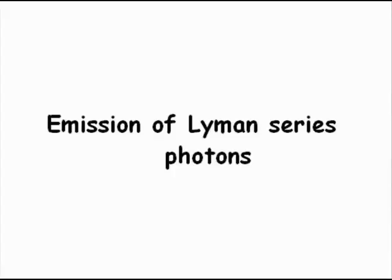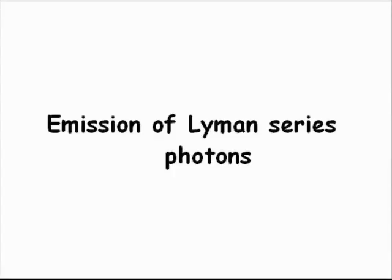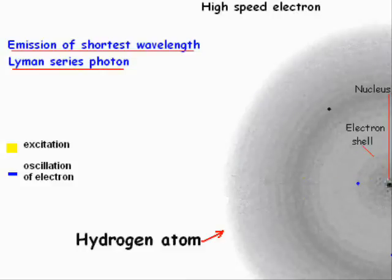Regarding the emission of Lyman series photons: when the electron shell of a hydrogen atom is excited, it oscillates at its natural frequency, and so does the electron present in the shell. This oscillation causes the emission of the shortest-wavelength Lyman series photon, and the electron jumps from the electron shell to an outer transubrations shell. If there is no further excitation, the electron instantaneously falls back to the electron shell.